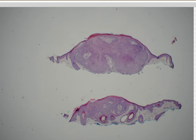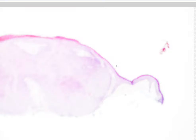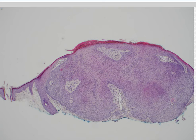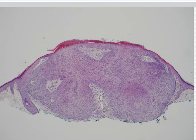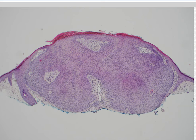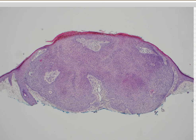Case 13. What's this? A tricholemmoma. Tricholemmoma — if you want, you can spell it that way so you remember they can be associated with Cowden syndrome. They have a cup shape bulging down into the dermis with very smooth borders.